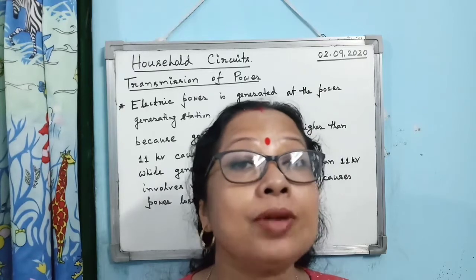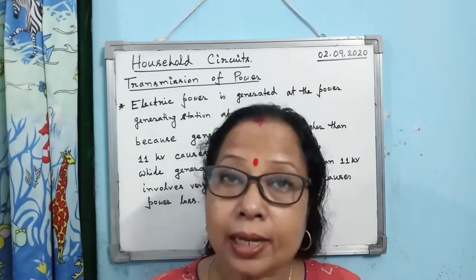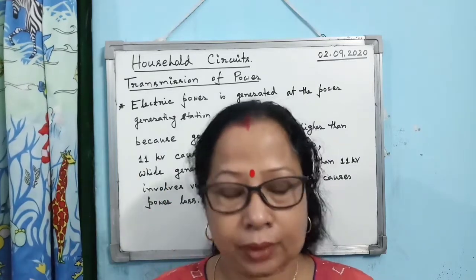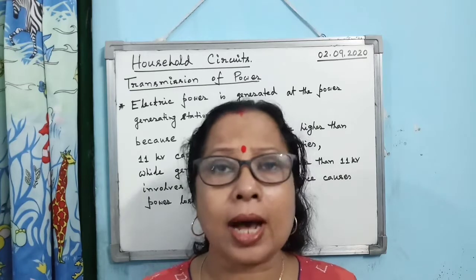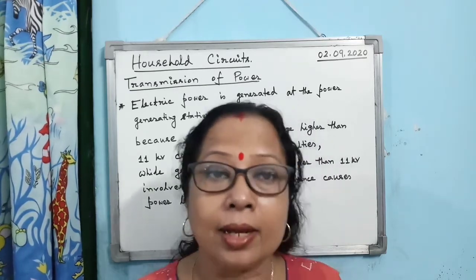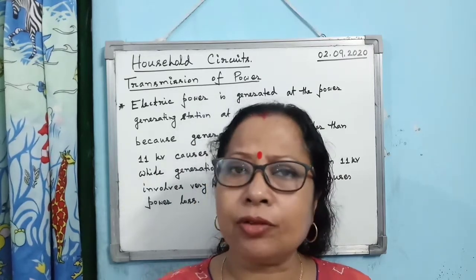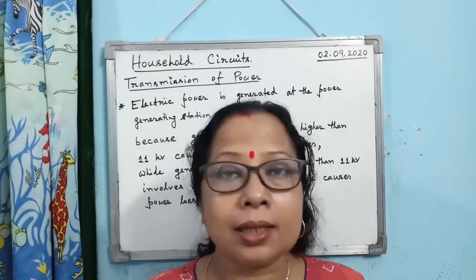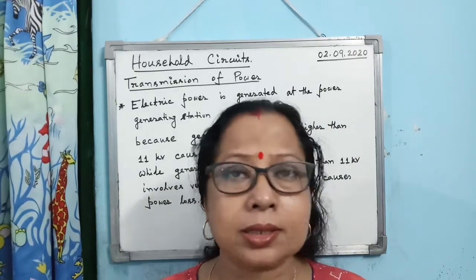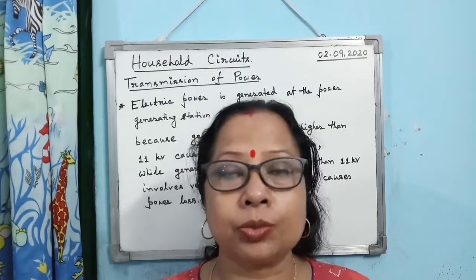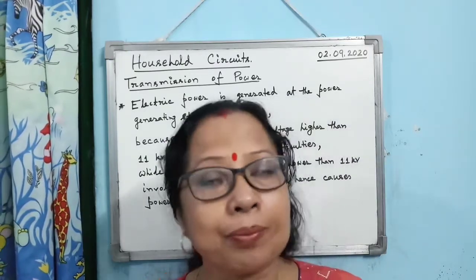Consider what happens during lightning: a heavily charged cloud carries such high voltage that it can break the insulating property of air between the cloud and the ground. Air generally does not conduct electricity, but due to that very high voltage, it transmits electrons from the cloud to the ground or vice versa. This means that when voltage is very high, it is able to break the insulating property of any material kept near it.